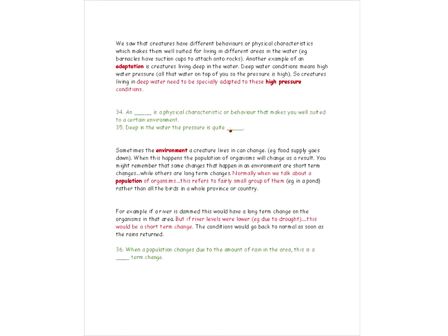Sometimes the situation in an animal's living environment changes — for instance, the food supply goes down. When there's a change in the environment, there will be a change in population numbers. Some changes are short-term, like a bit more rain than usual, while others are long-term, like people damming a river. With a short-term change, conditions go back to normal when the rain returns. When a population changes due to the amount of rain in an area, this is a short-term change.